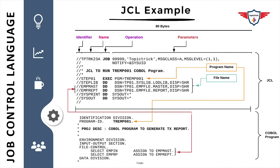In the parameter section you have different positional and keyword parameters — message class, message level, notify. Lines three, four, and five are comments that say 'JCL to run TREMP001 COBOL program.' Line six has STEP01 EXEC PGM=program-name, which is the first step of the JCL. I've used STEP01 as the name of this step, but you can use any name. From a readability perspective, I generally use STEP01 or something related to the program. Just below that you have STEPLIB, where you specify the PDS name from which the load module of the program will be picked up.